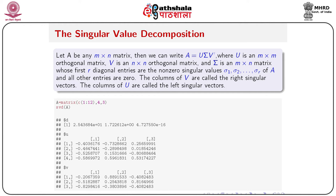The columns of V are called the right singular vectors and the columns of U are called the left singular vectors. For example, A equals a 4 by 3 matrix with elements 1 to 12. For singular value decomposition, there is a function called svd(). If you pass matrix A within svd(), it gives you d, u, and v — where d contains the diagonal singular values, u is the left singular vectors, and v is the right singular vectors.